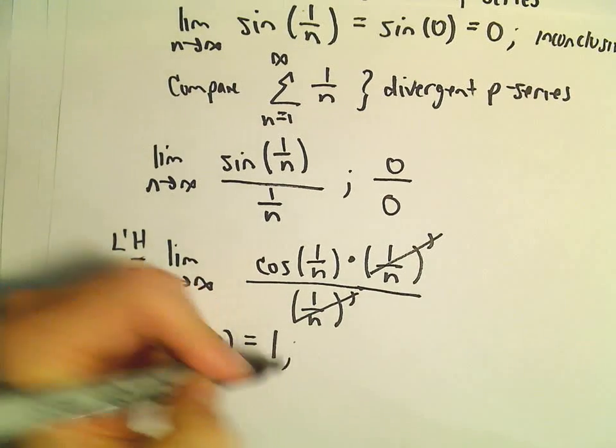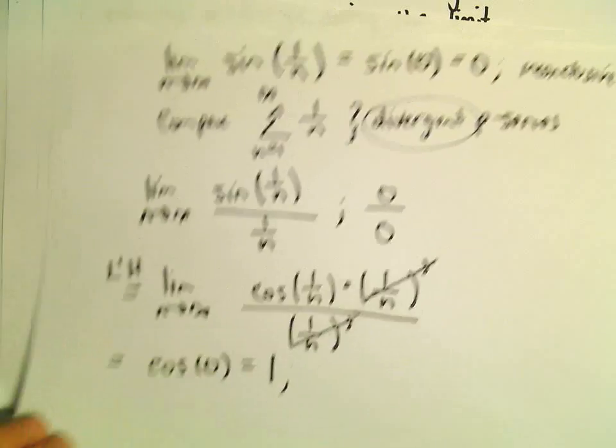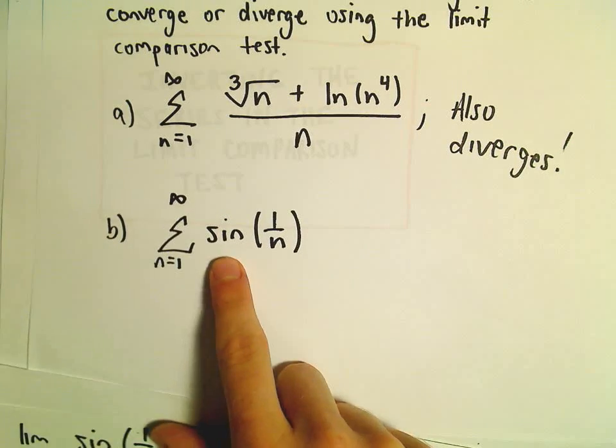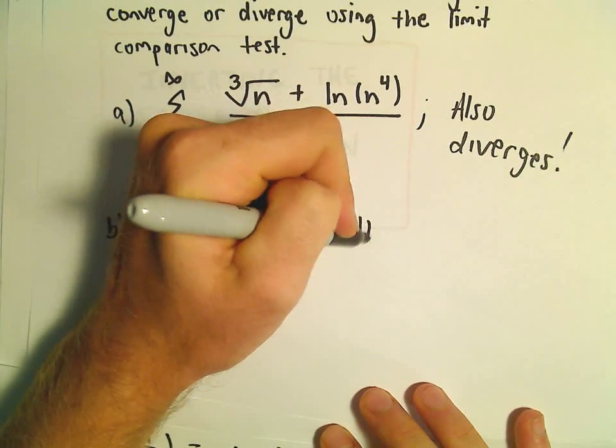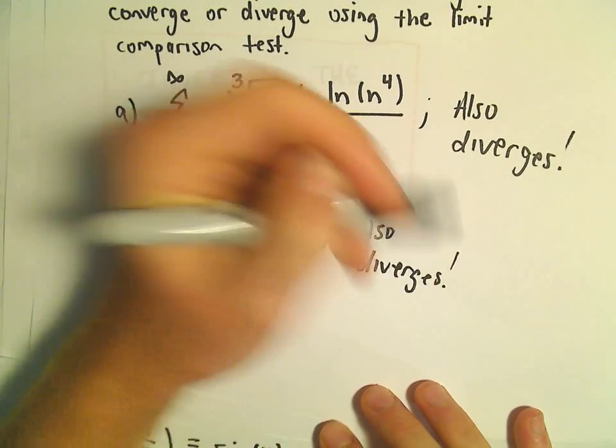Again, we get a positive finite number. Since we're comparing to a divergent p-series, that would tell us that our series in question also diverges. So, let's put this in place.